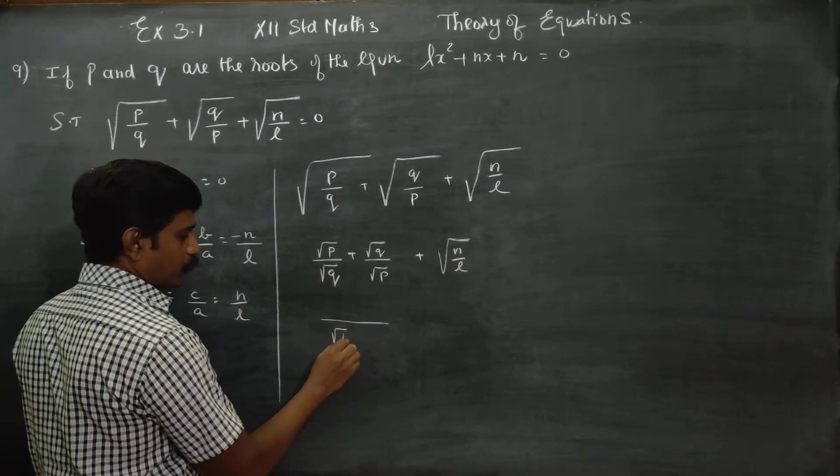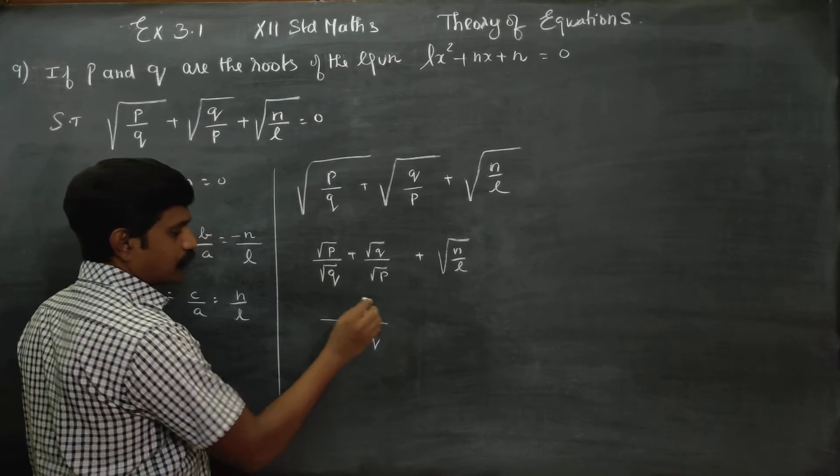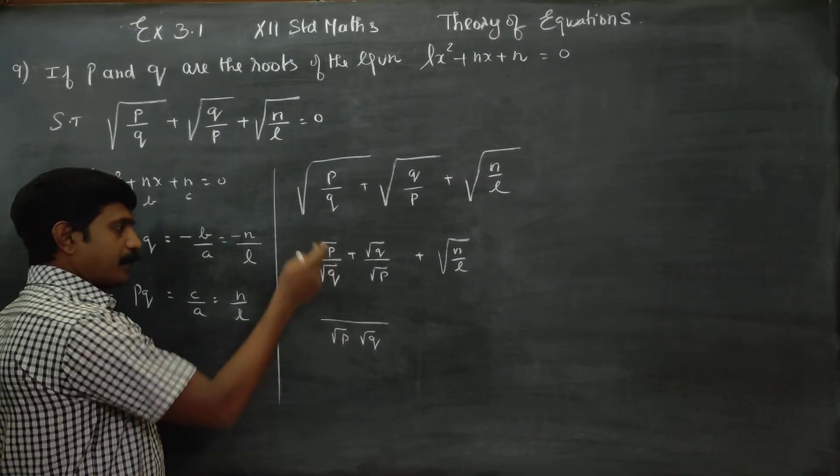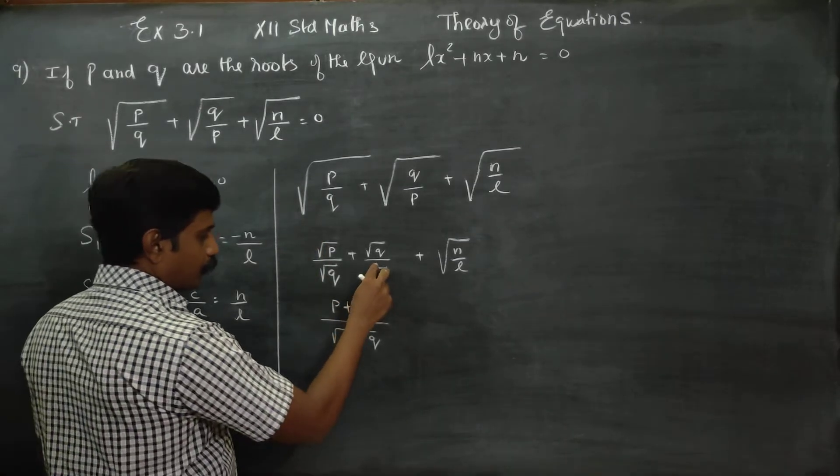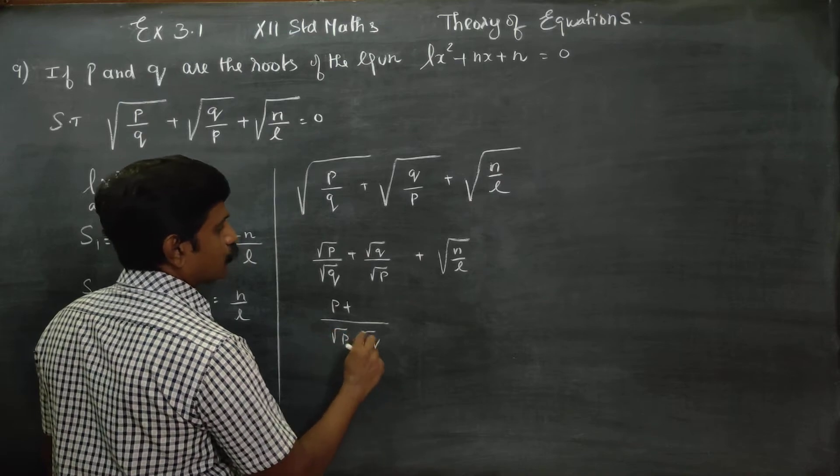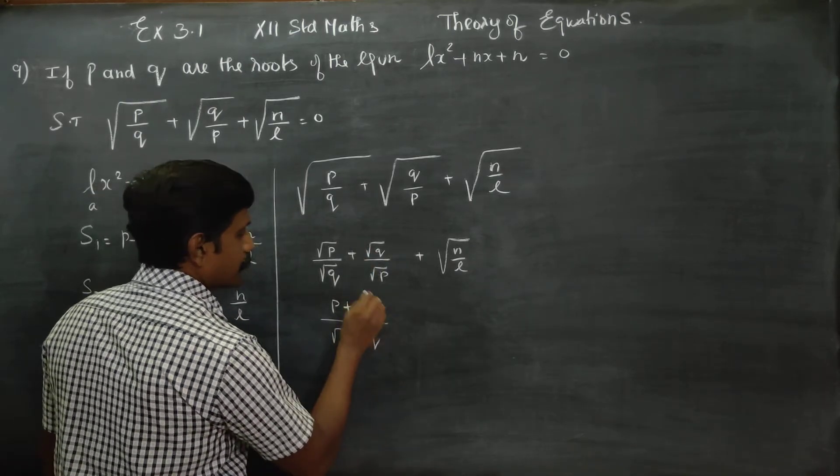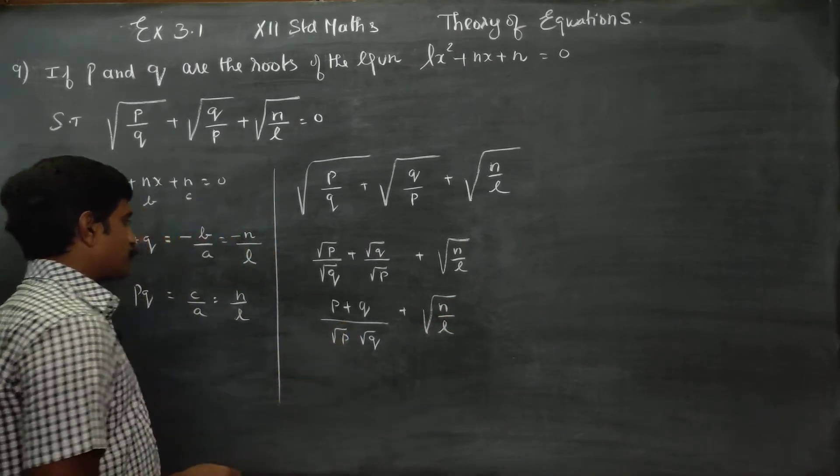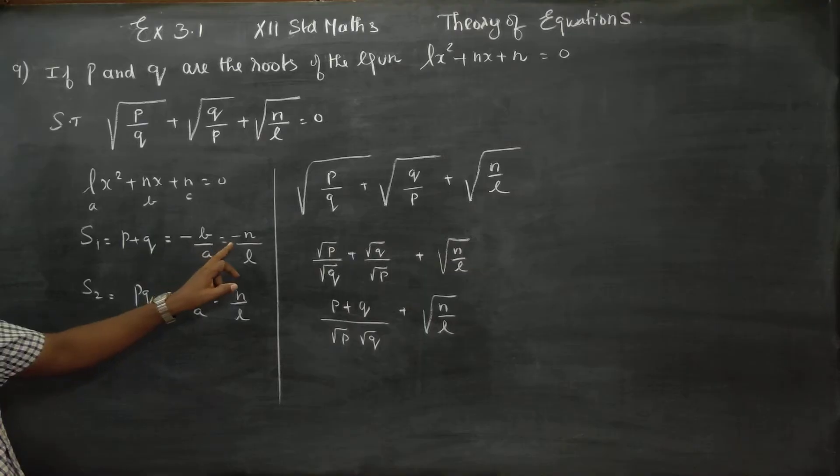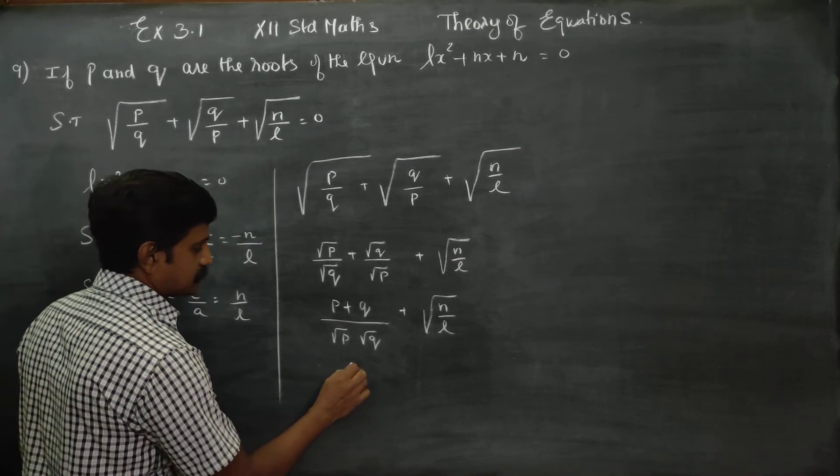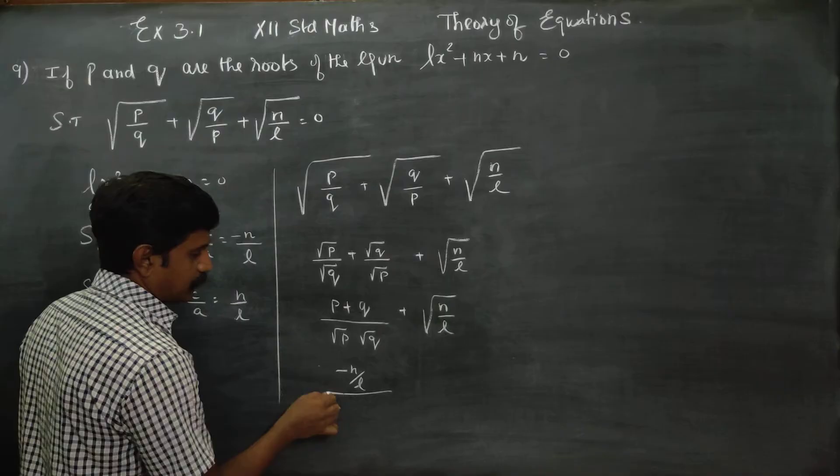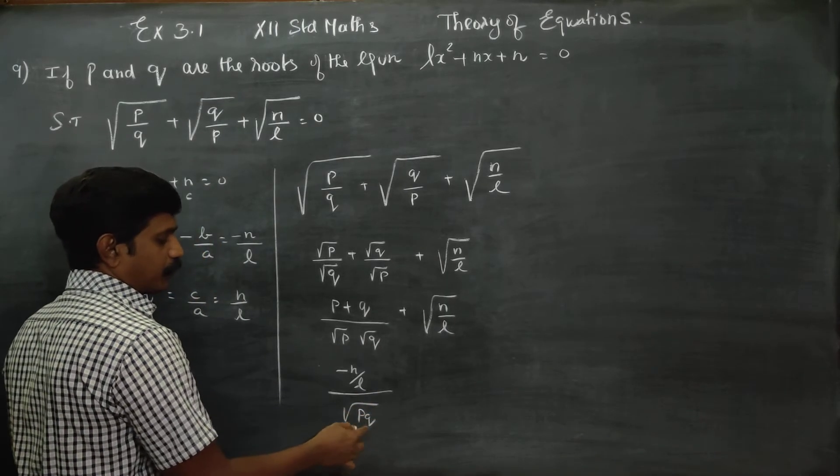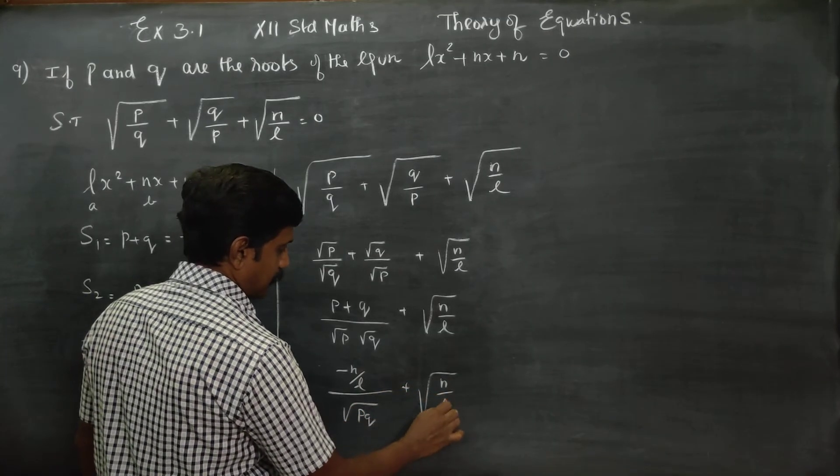Taking LCM, we get root P squared plus root Q squared in the numerator over root of PQ in the denominator. P plus Q would be minus N by L. The denominator root PQ equals root of N by L.